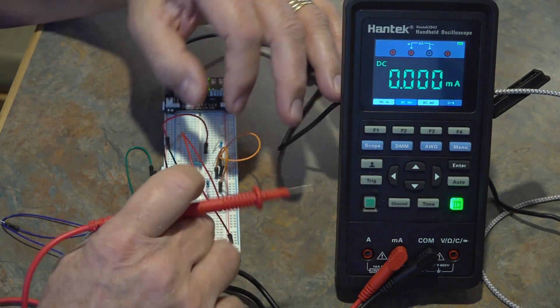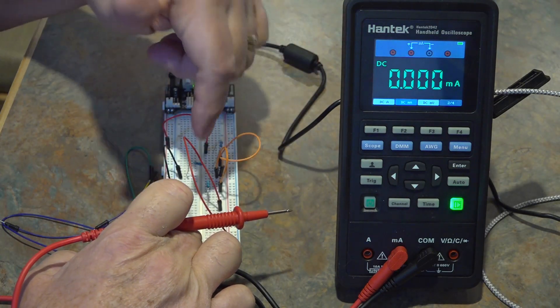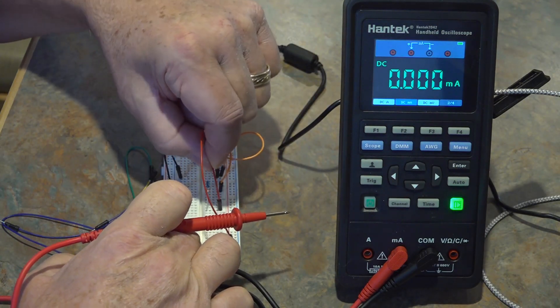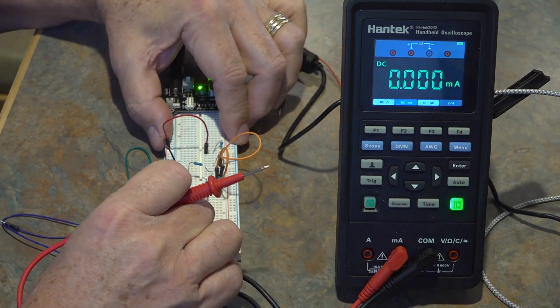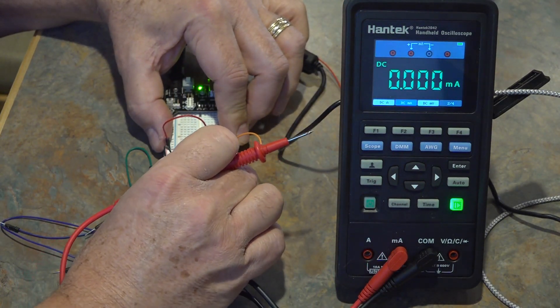So I'm going to disconnect the 3.3 volt wire, actually I didn't have to do that but okay. So I'm going to hook the ground side of the meter to the resistor.